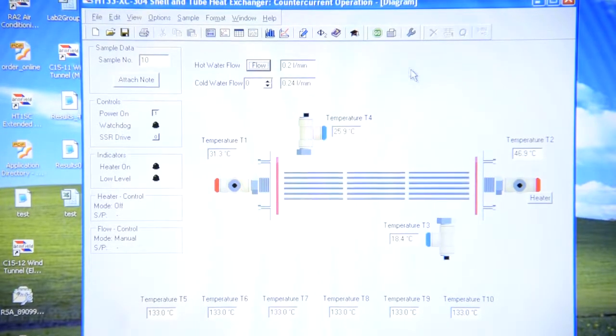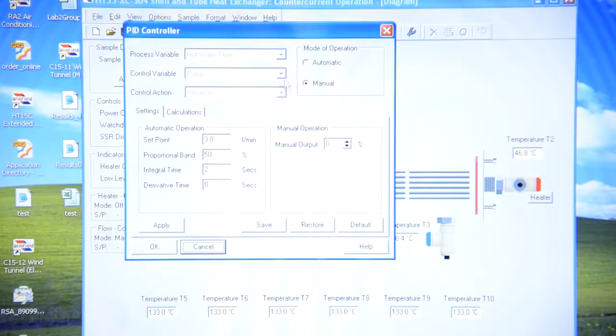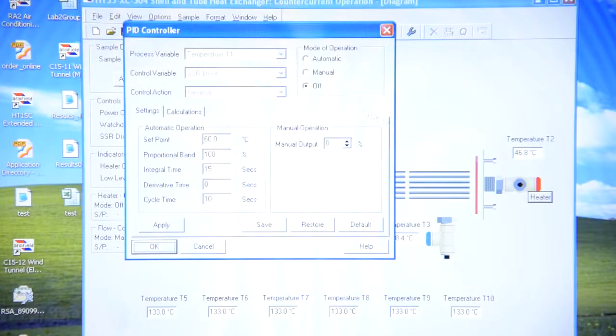When you've done your experiment, make sure that cold water flow is equal to zero, hot water flow is equal to zero, and the heater is switched off.